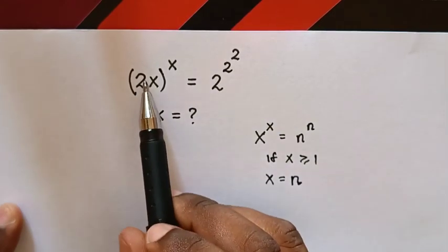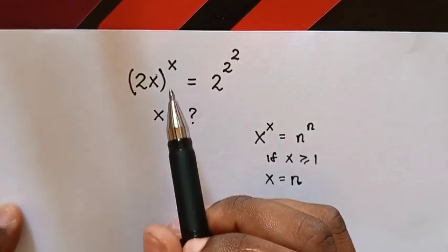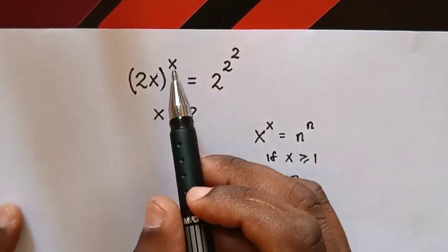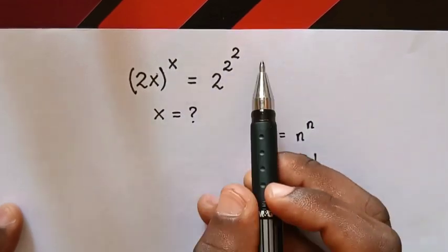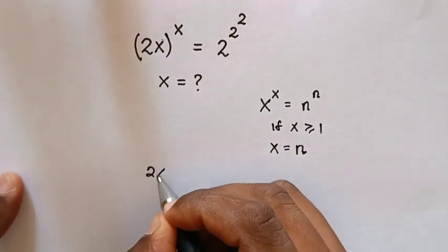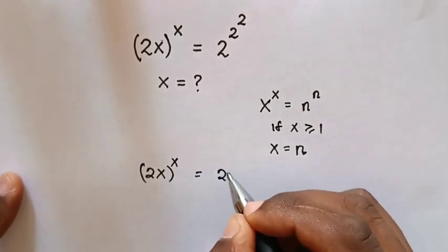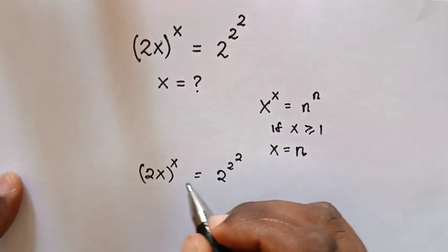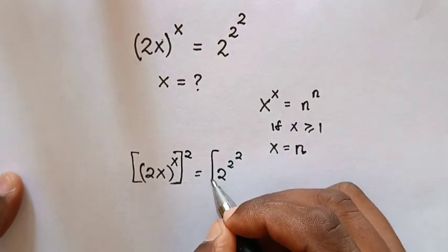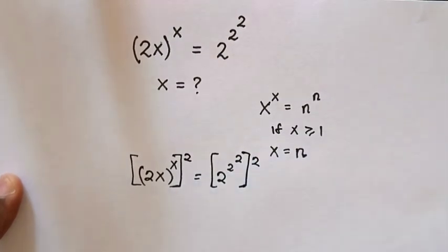From our question, in the left side we are going to make it to have same base and same power, and also in the right side to have same base and same power. So we will multiply by power of 2 in both sides, so it will be 2x bracket power of x is equals to 2 power of 2 power of 2. We multiply by power of 2 in both sides so as to have same base and same power.